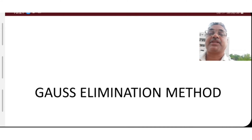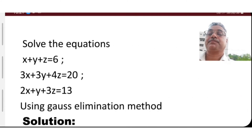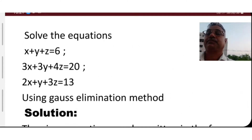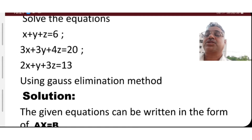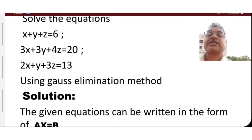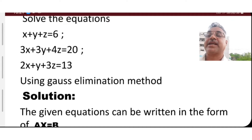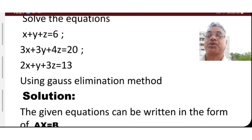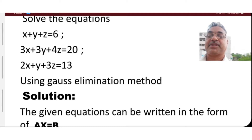Gauss Elimination Method. Solve the equations: x plus y plus z is equal to 6, 3x plus 3y plus 4z is equal to 20, and 2x plus y plus 3z is equal to 13, using Gauss Elimination Method.